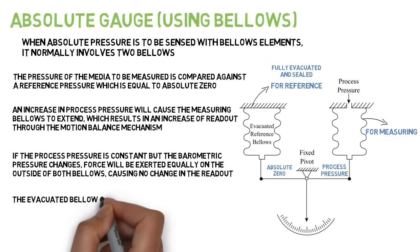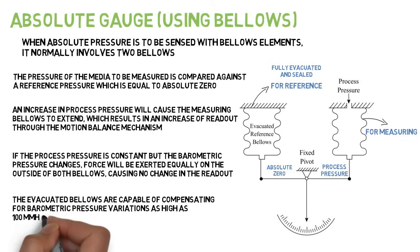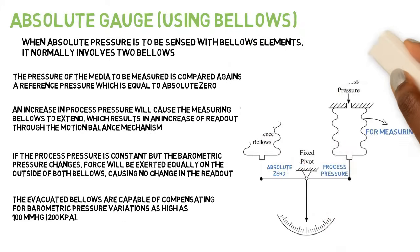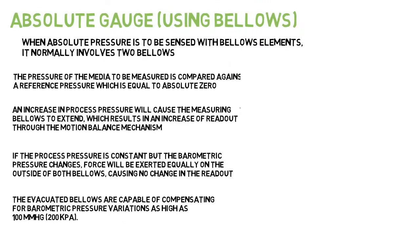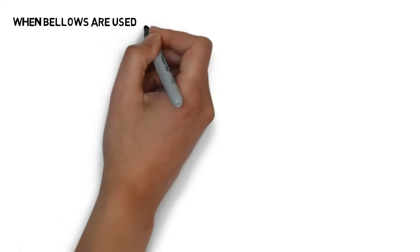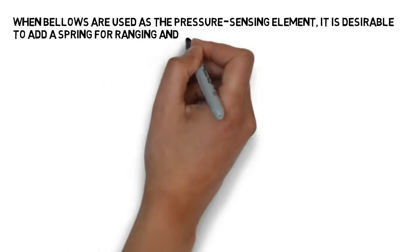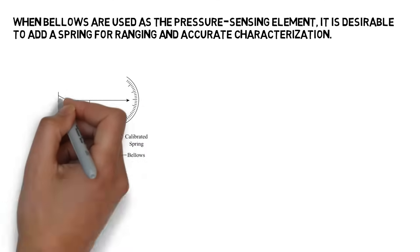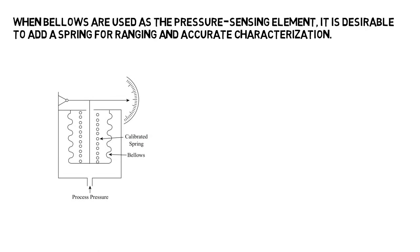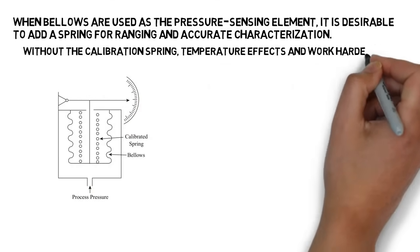The evacuated bellows are capable of compensating for barometric pressure variations as high as 100 millimetres of mercury. When bellows are used as the pressure sensing element, it is desirable to add a spring for ranging and accurate characterization. Without the calibration spring, temperature effects and work hardening of the bellows would cause a loss of accuracy.